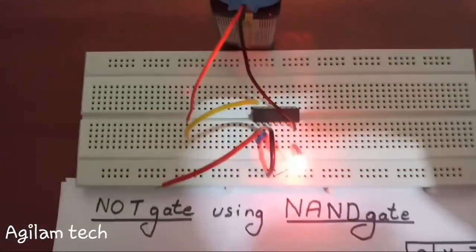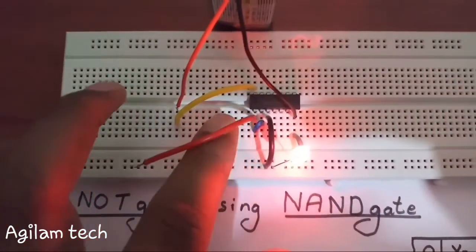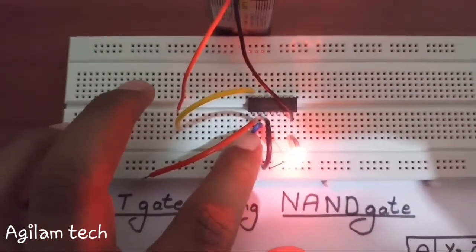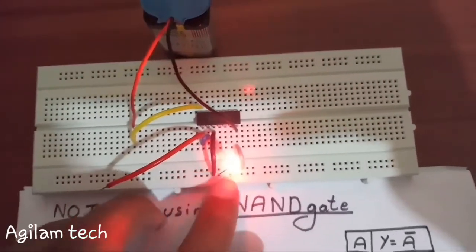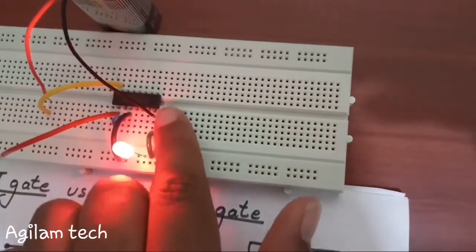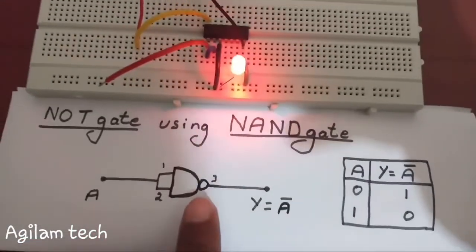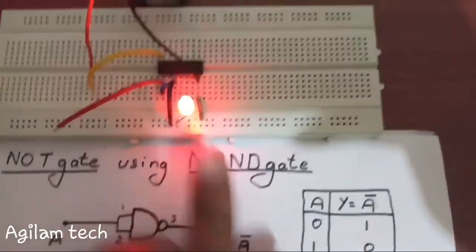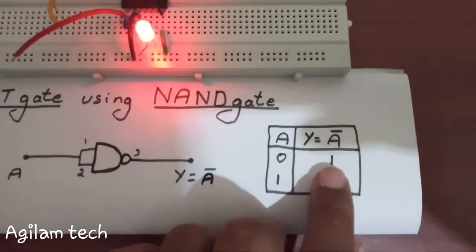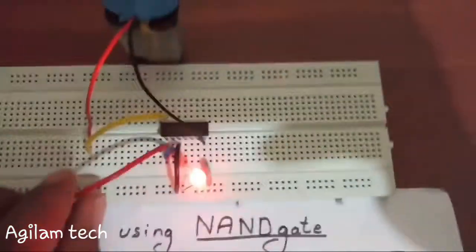Now we are going to see the circuit. Pins 1 and 2 are shorted in the circuit below, and pin 3 is taken as output. As you see in the circuit, the LED is on because the output is 1.